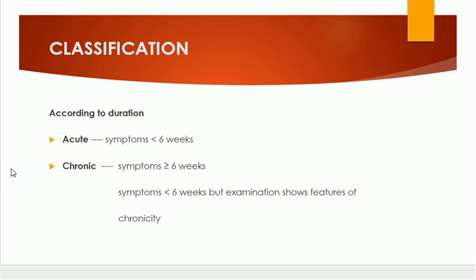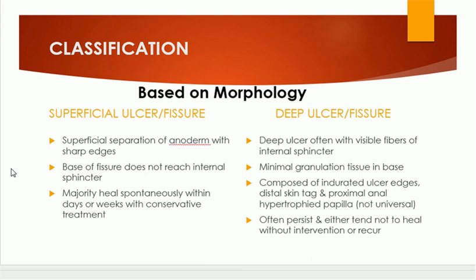Another way of classifying is based on morphology: anal fissure can be a superficial variety — superficial ulcer formation — or it can be a deep fissure. A superficial fissure shows separation of the anoderm with sharp edges. In cases of superficial ulcer, at the base of the fissure we do not see any internal sphincter fibers.